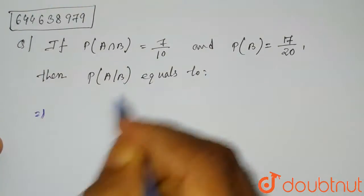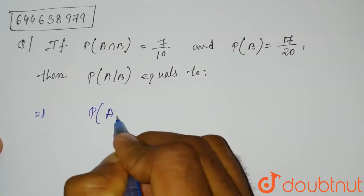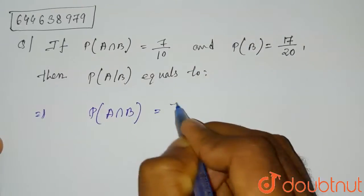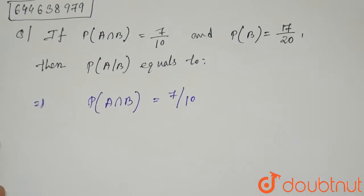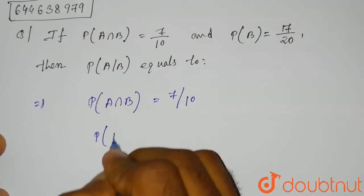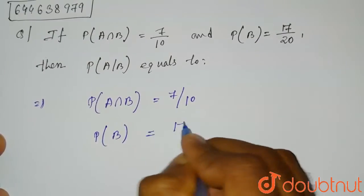So here it is given, let's first write what is given to us. It is given that P of A intersection B equals 7 divided by 10 and probability of B equals 17 by 20.